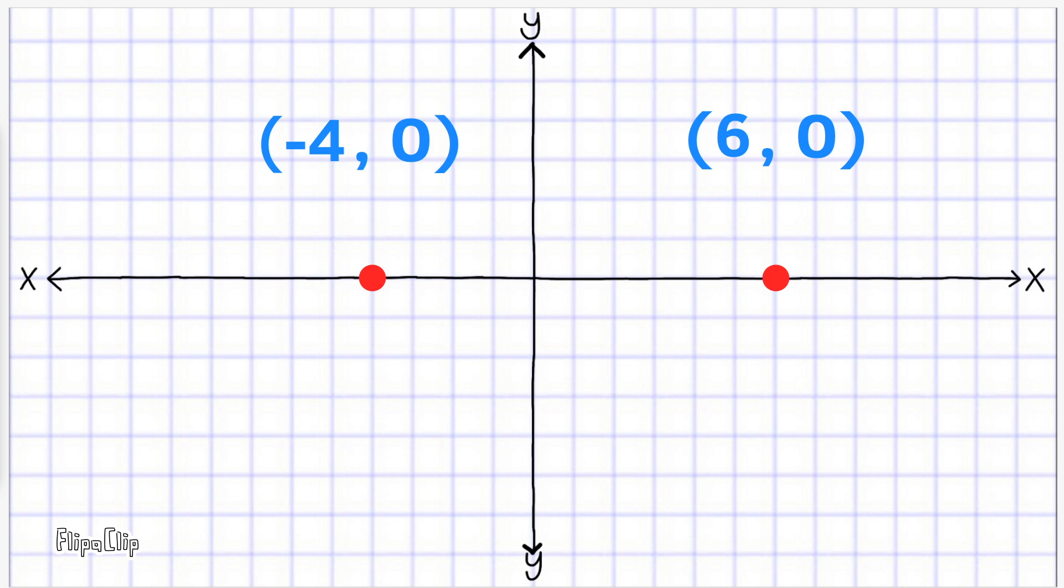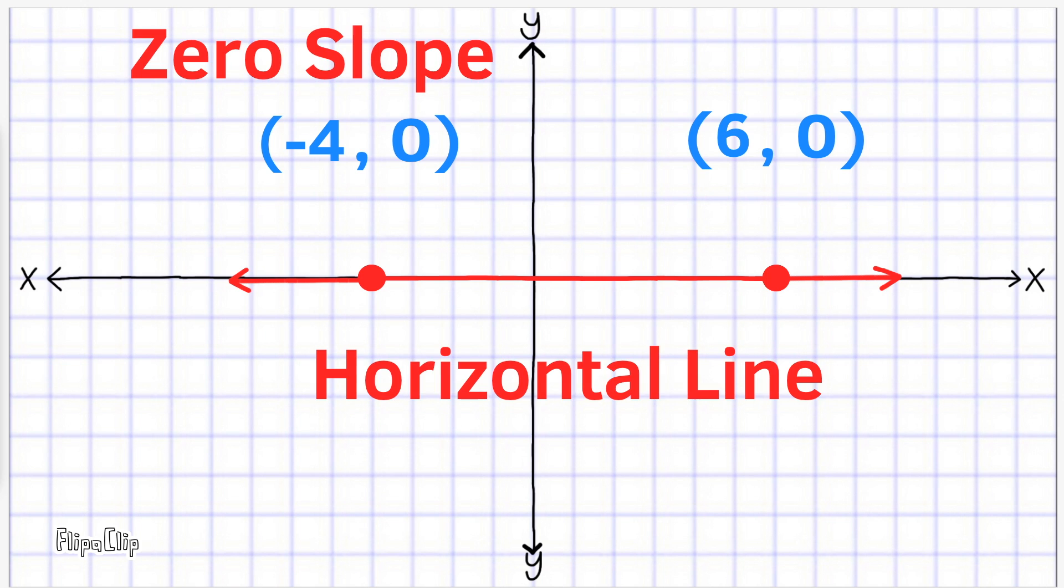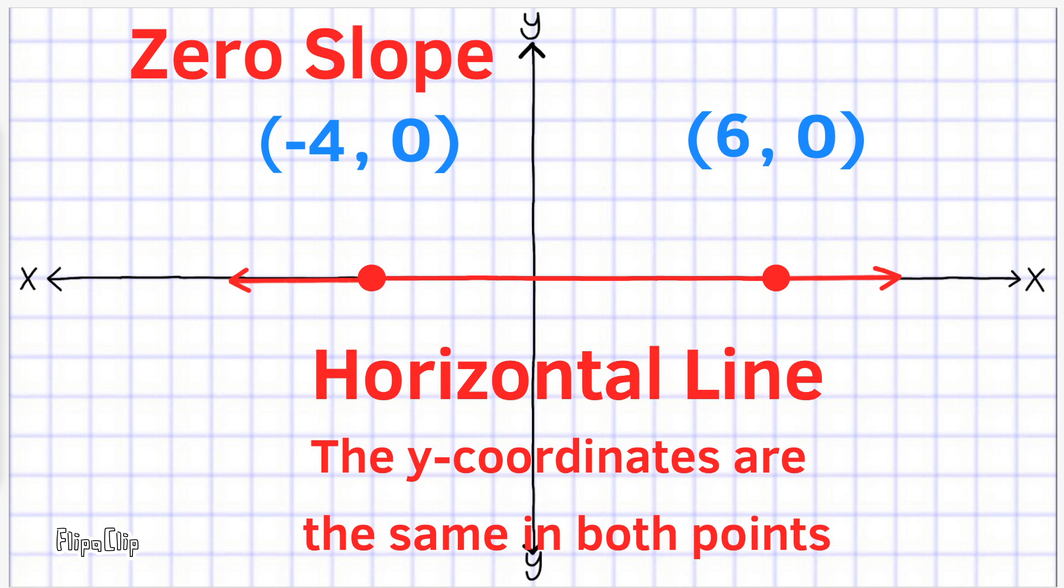Let's add another point and create a line with zero slope. That means it's a horizontal line. The y coordinates are the same in both points. In other words, the y coordinates are the same in both ordered pairs. As long as it's a horizontal line, the ordered pairs will have matching values for the y coordinates.